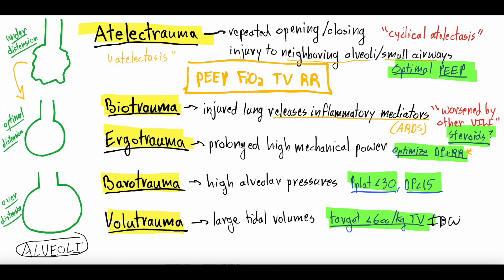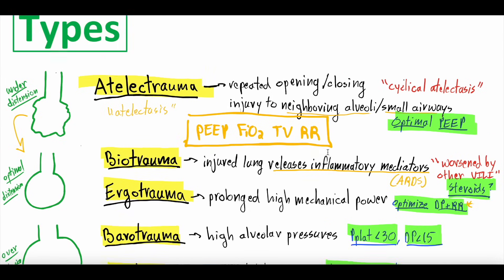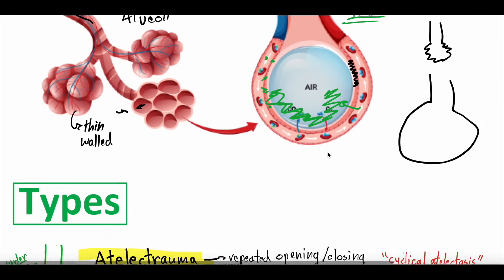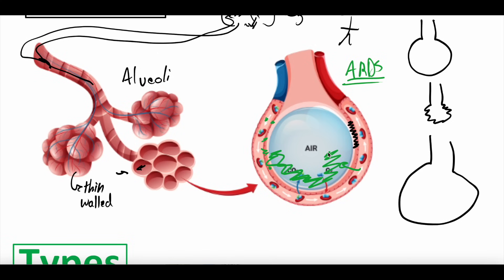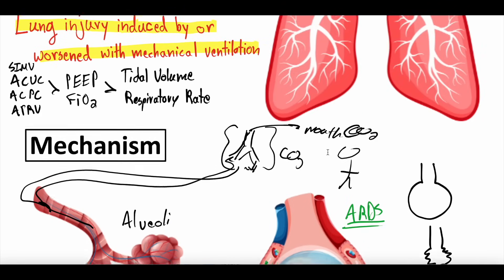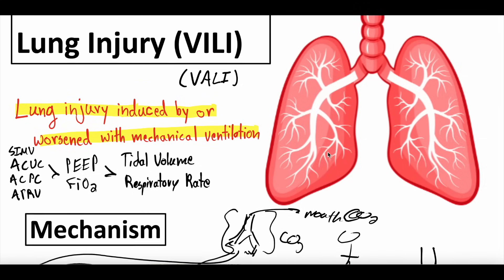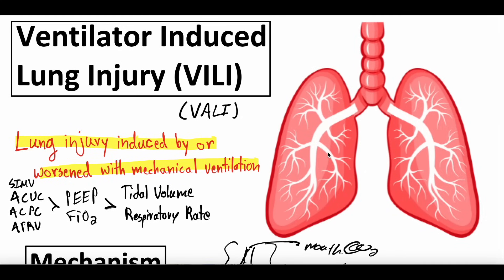These are the primary types of ventilator-induced lung injury and their simplified management strategies. VILI does occur, but there are ways to minimize it: optimize PEEP to prevent atelectrauma, use steroids for biotrauma, minimize mechanical power exposure for ergotrauma, and target plateau pressure under 30 and tidal volumes under 6 cc/kg to prevent barotrauma and volutrauma. Using these strategies, we can bridge patients, get them the treatments they need, and get them off the ventilator as quickly as possible — because we never want anyone on a ventilator longer than absolutely necessary.